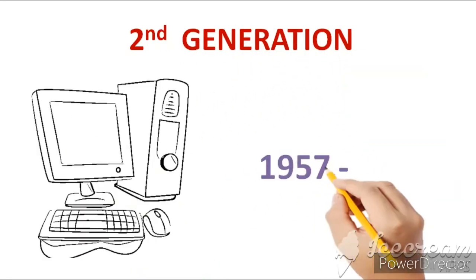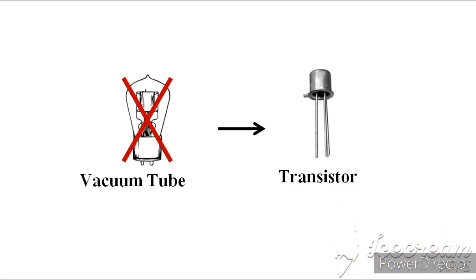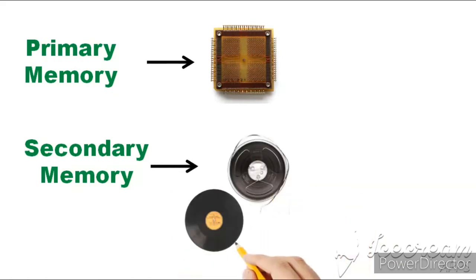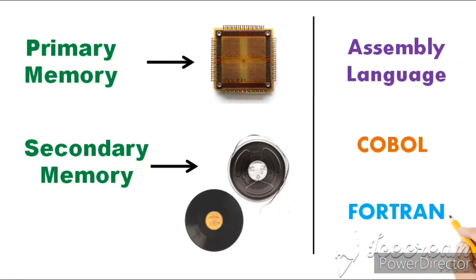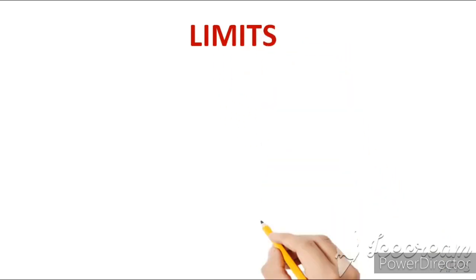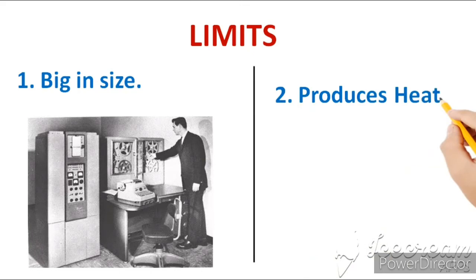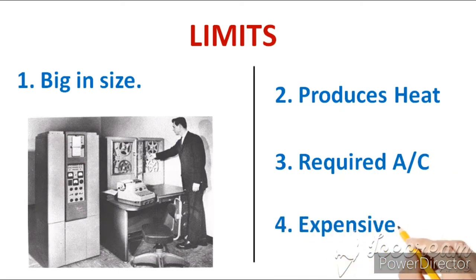Now friends, let's move to the second generation. Second generation computers' period of time is 1957 to 1965. In this generation, transistors were used in place of vacuum tubes. Primary memory used magnetic cores, and secondary memory used magnetic disks and magnetic tapes. In this generation, assembly language, COBOL, and FORTRAN languages were used. Limits: first, big in size — although they were much smaller compared to first generation computers, they were still quite large. Second, they still produced considerable heat, which meant AC was still required, and for the same reason they were still very expensive.